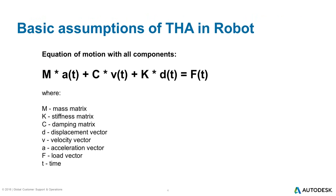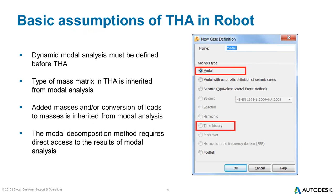On this slide you can see the basic equation of motion. This is exactly the same equation as presented during our previous webinar for FRF analysis. For dynamic analysis in Robot, the mass matrix is constant and does not change during the analysis. The same applies to the stiffness matrix for all types of analysis, with the exception of static nonlinear and nonlinear time history analysis. As in Robot you decide on the mass matrix in the modal analysis parameters, you have to define it before a time history analysis case. The modal case is also needed for definition of additional masses or load-to-mass conversion. Time history analysis requires access to the results of modal analysis, and its precision depends on the number of calculated modes when the modal decomposition method is selected.